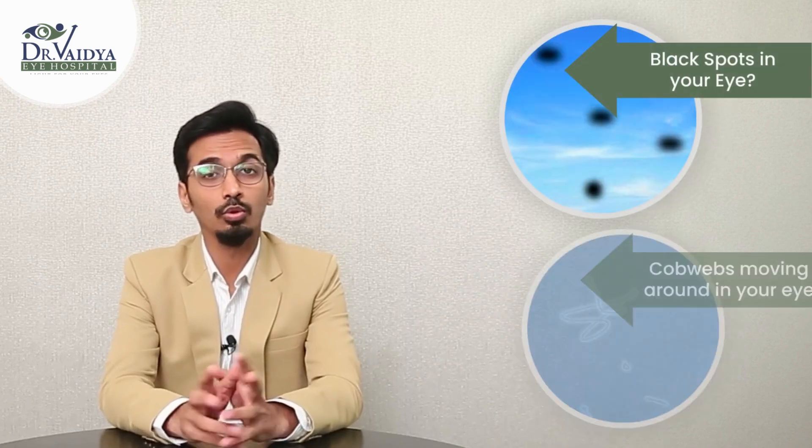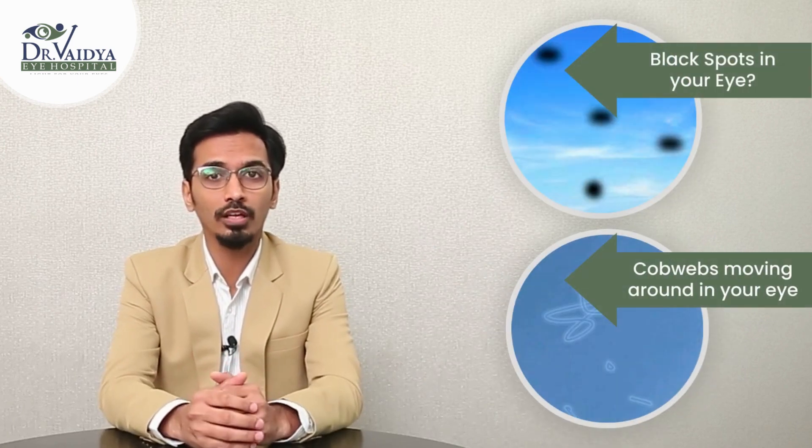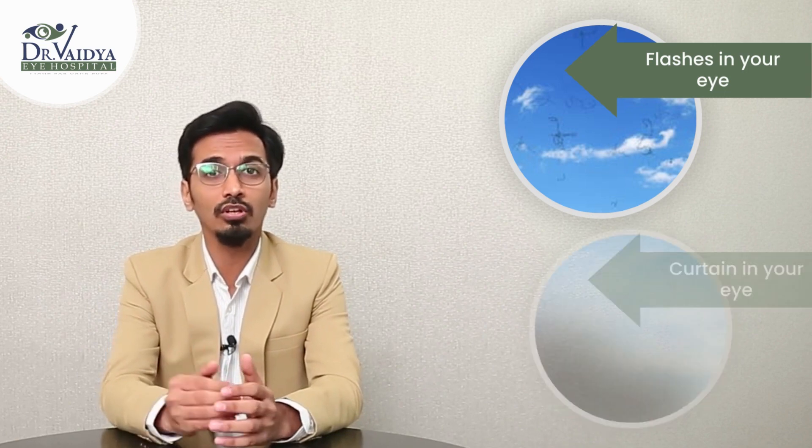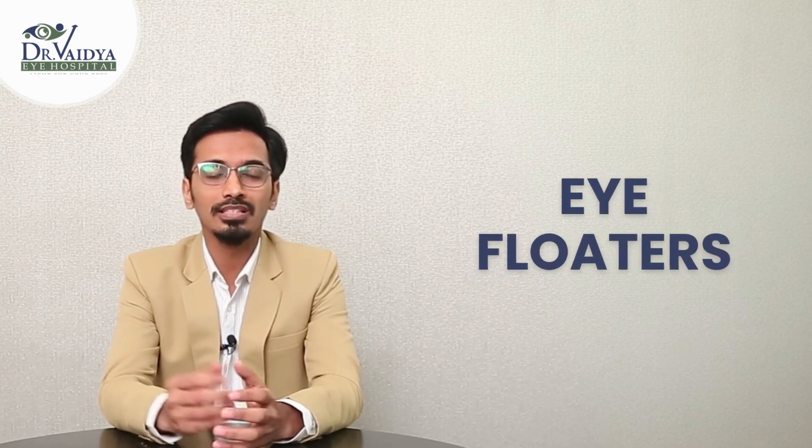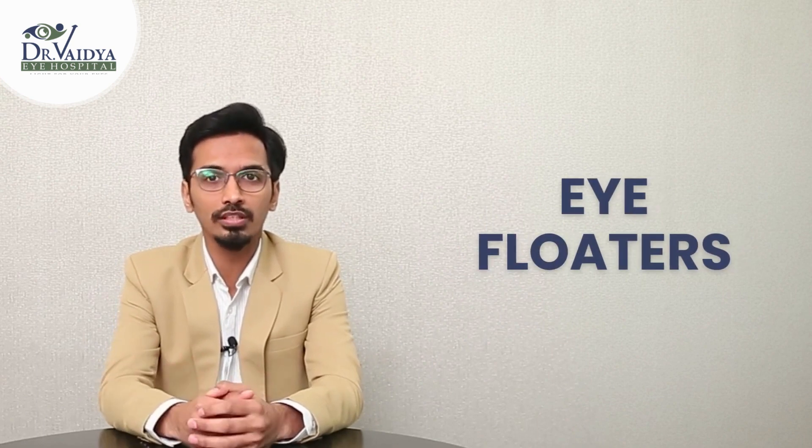So you have black spots in your eyes, you have cobwebs moving around in your eyes, sometimes you may see flashes or even a curtain in the eye. What are these? Well, these are what we call eye floaters — something that floats in the eye.